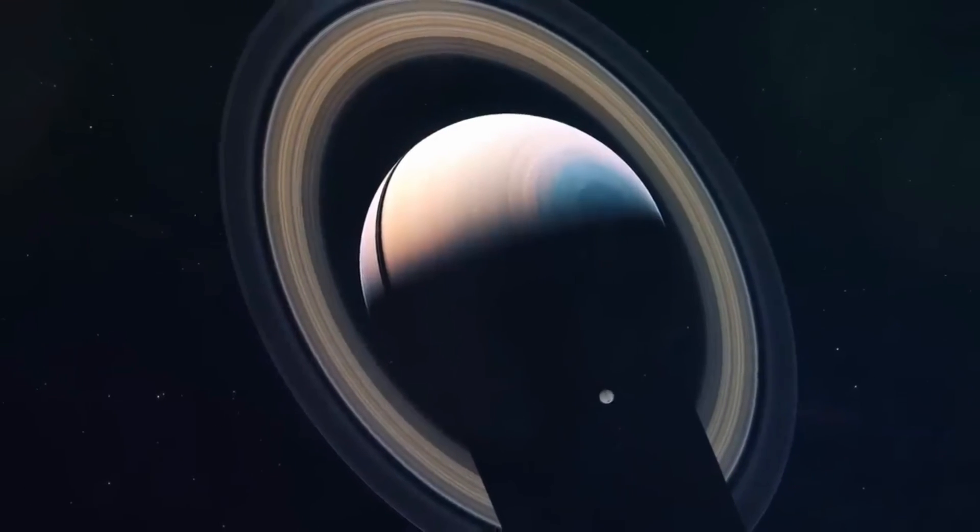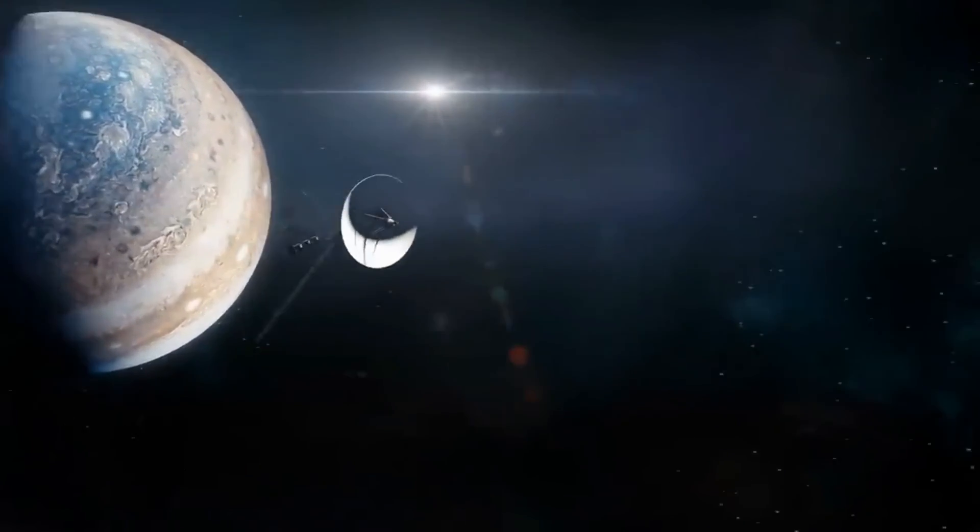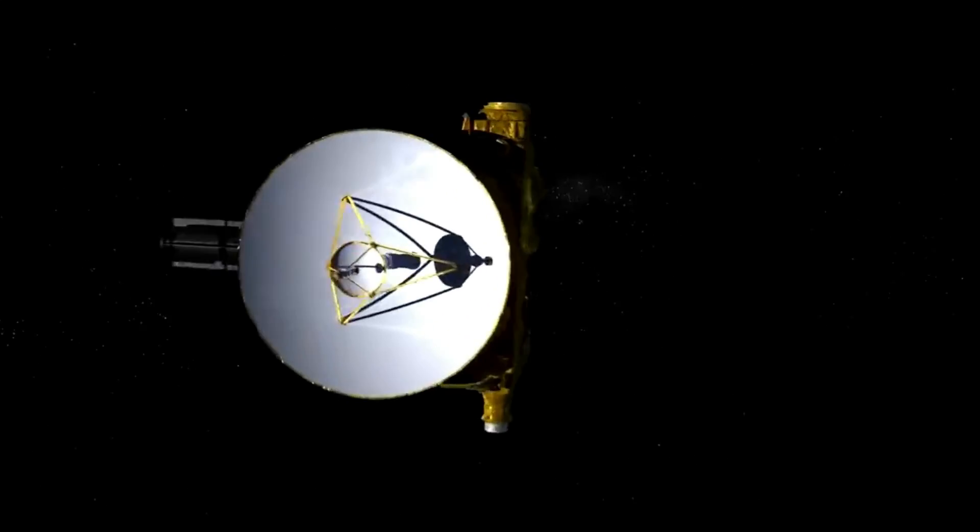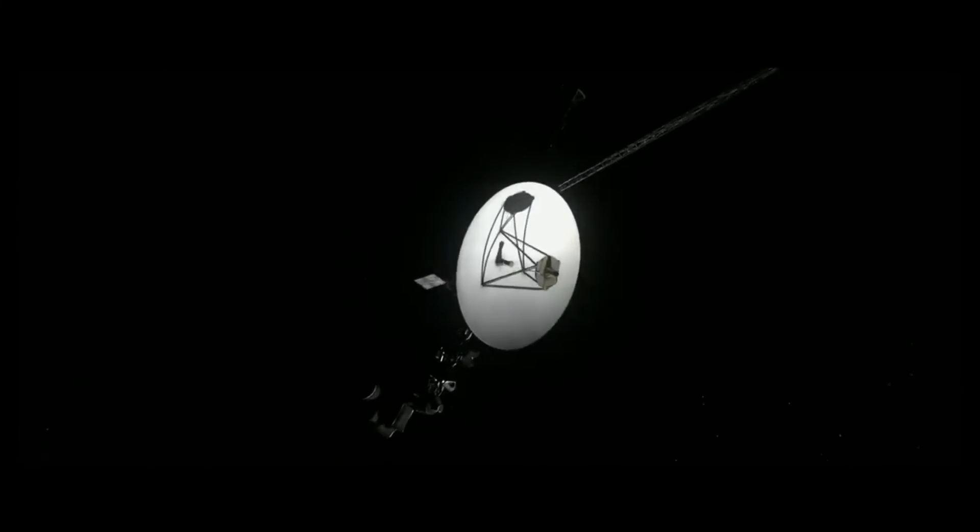The golden record also contains images of Earth, our solar system, and a map of Earth's position in the galaxy, so they know exactly where to find us. It's like leaving a note in a bottle, but in space. Who knows, aliens might even be jamming to our tunes as they read our message.